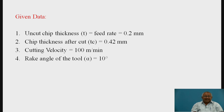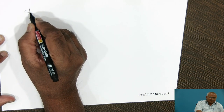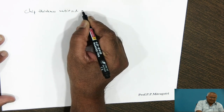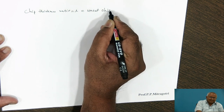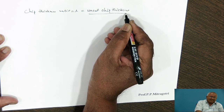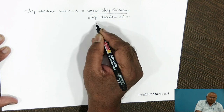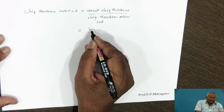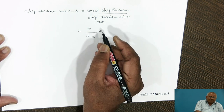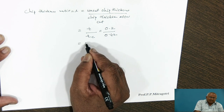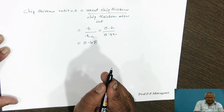The given data: uncut chip thickness T is 0.2 mm (the feed rate), chip thickness after cut Tc is 0.42 mm, cutting velocity V is 100 meters per minute, and rake angle alpha is 10 degrees. Chip thickness ratio R is the ratio of uncut chip thickness divided by chip thickness after cut, so R equals 0.2 divided by 0.42, which comes out to be 0.48.